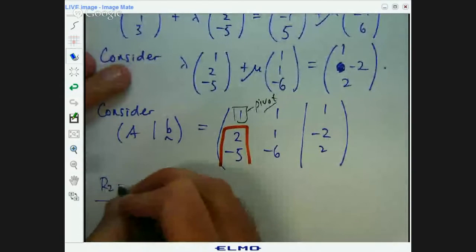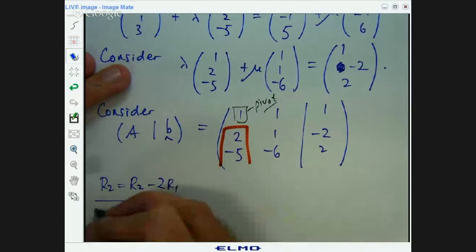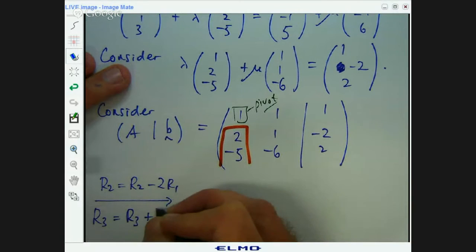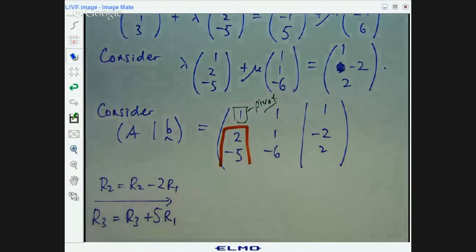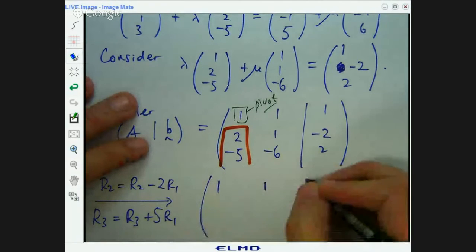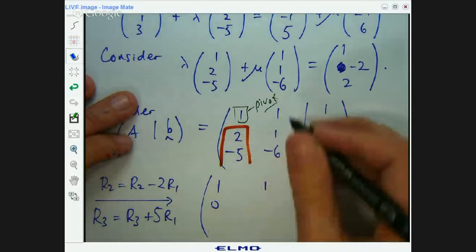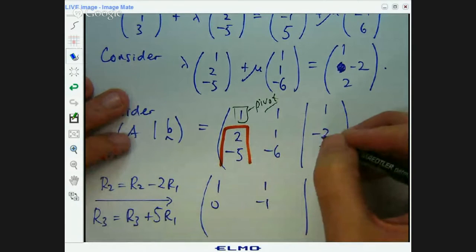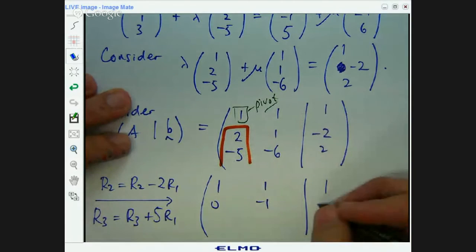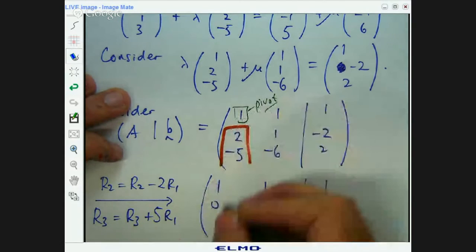Row two equals row two minus two row one. Row three equals row three plus five row one. What's that going to come up with then? I'm going to get two minus two, zero. One minus two, negative one. Negative two minus two, negative four.